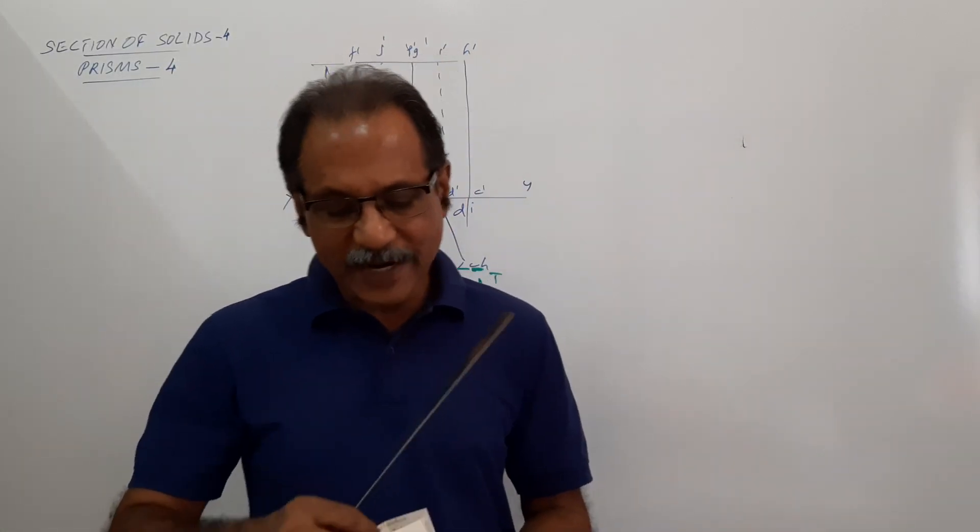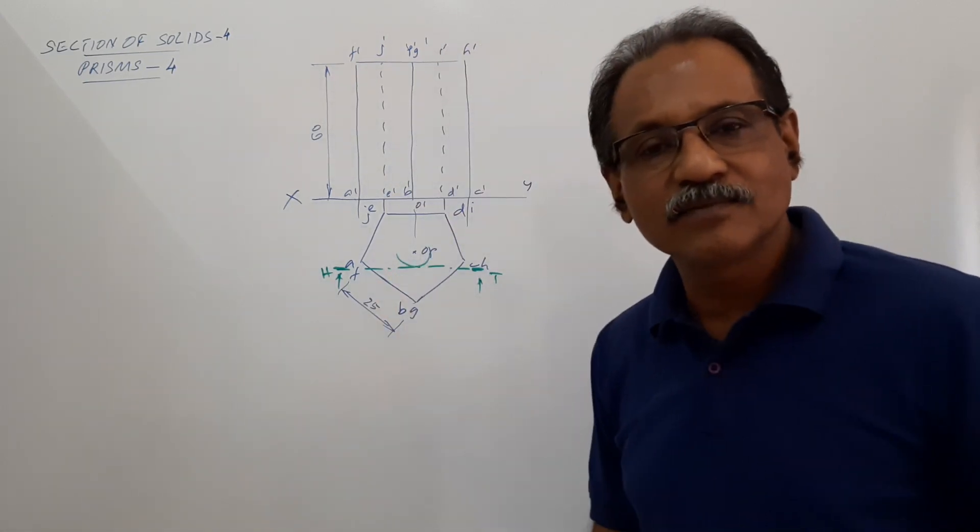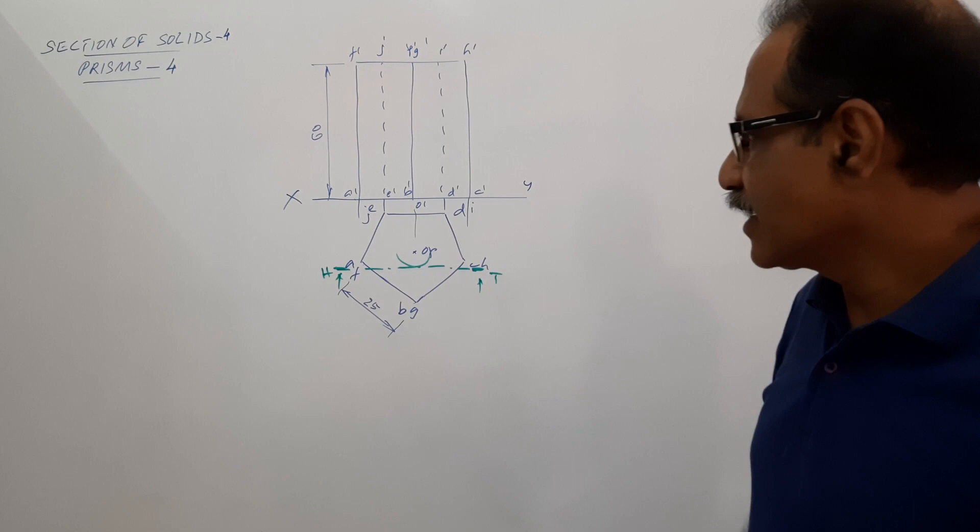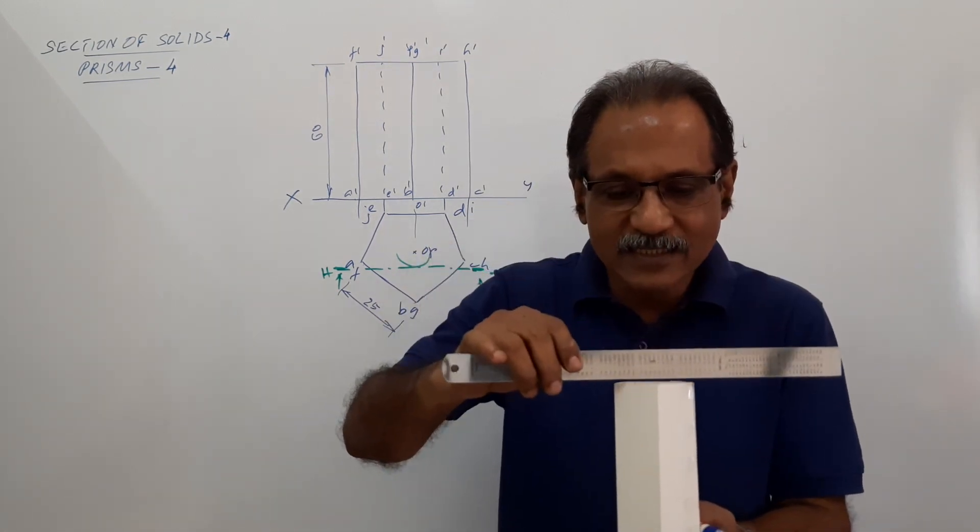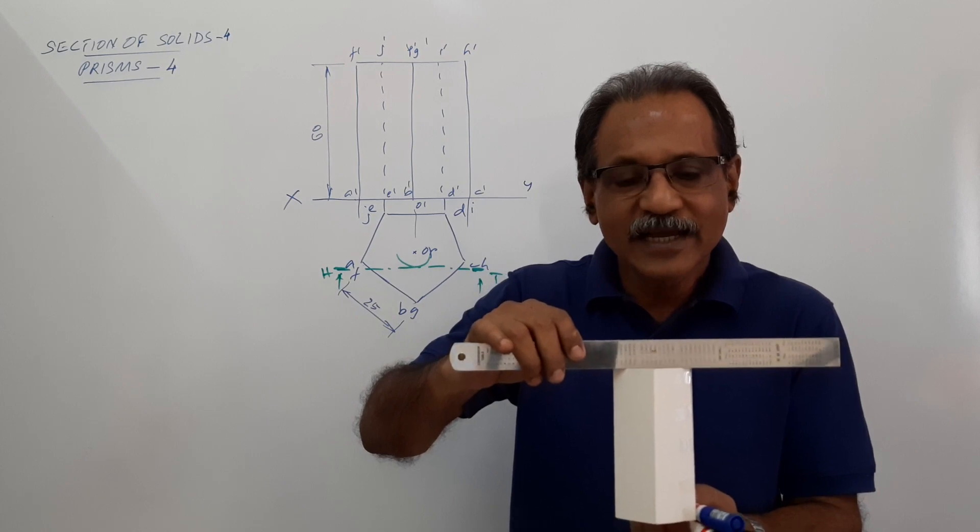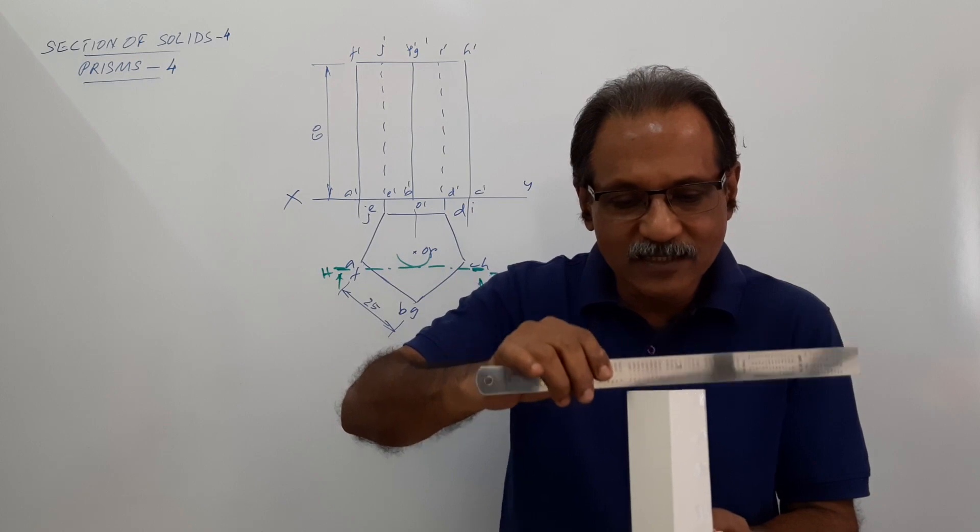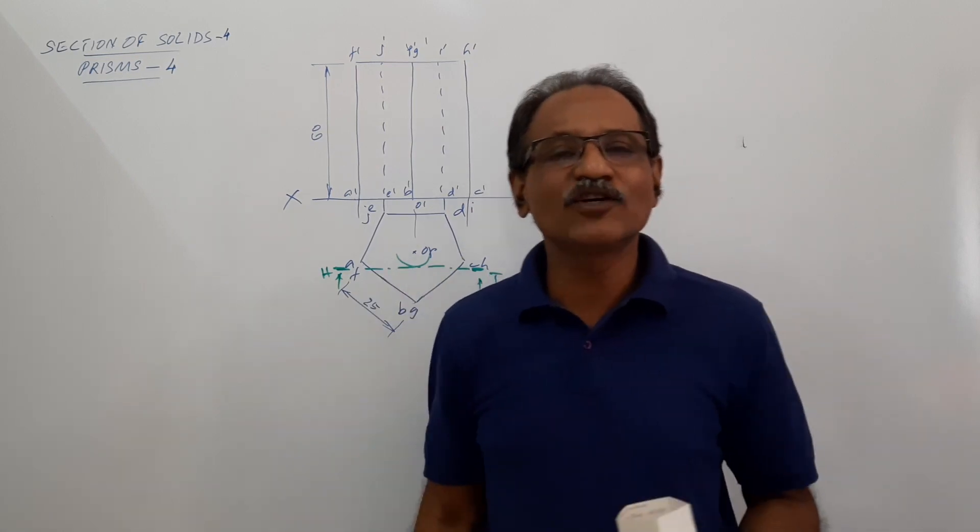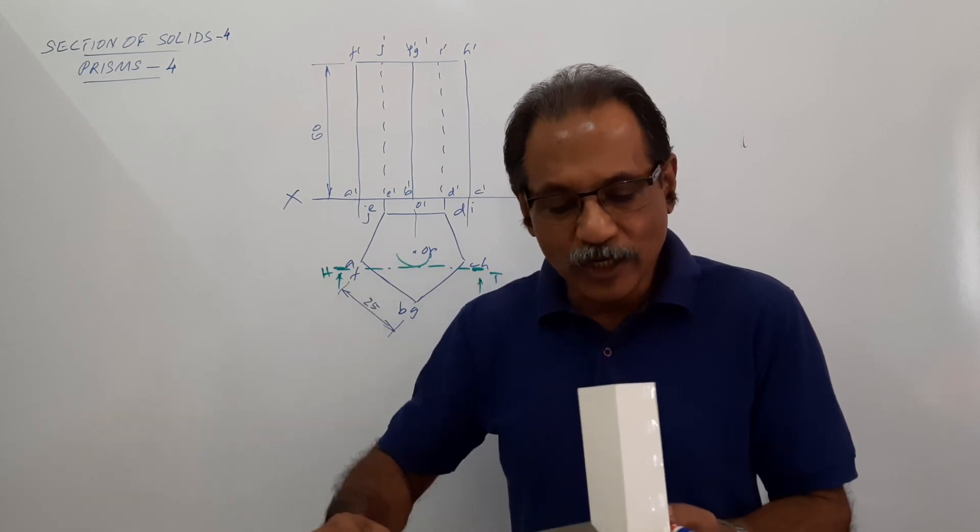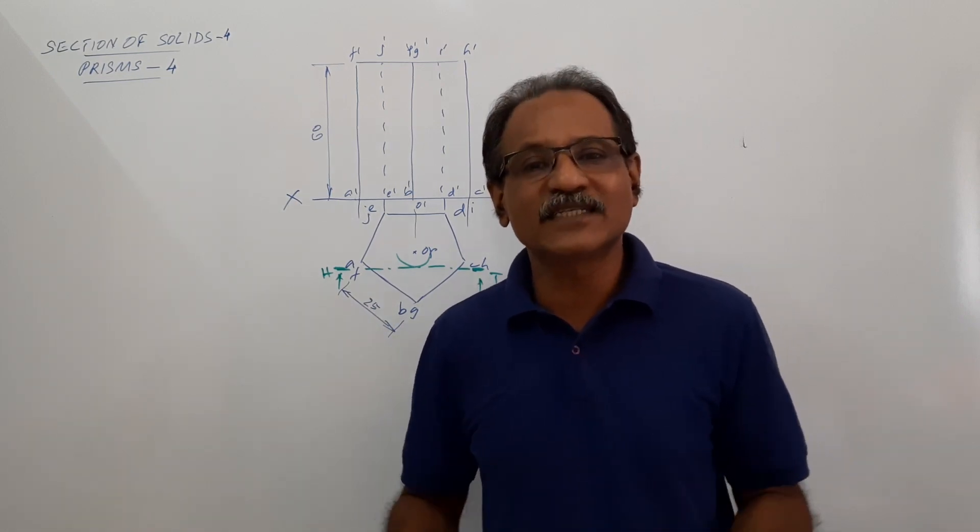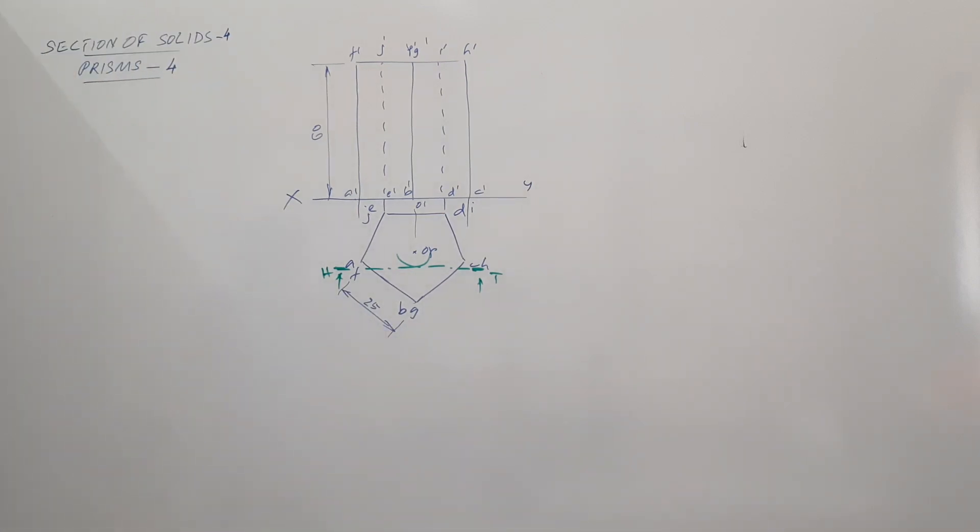How many vertical edges does the cutting plane cut? None. It does not cut any of the vertical edges; the cutting plane goes down like this. It cuts the top at 2 points and bottom at 2 points. Top and bottom edges at 2 points each. So there are totally 4 points.